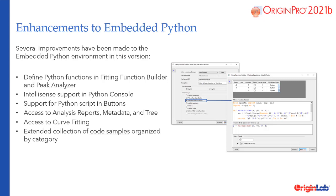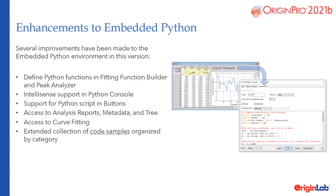Several improvements have been made to the embedded Python environment in this version. Users can define Python functions in the fitting function builder and peak analyzer. IntelliSense support is added in the Python console. There's support for Python script and buttons, access to analysis reports, metadata, and tree. Access to curve fitting and an extended collection of code samples organized by category is also available.